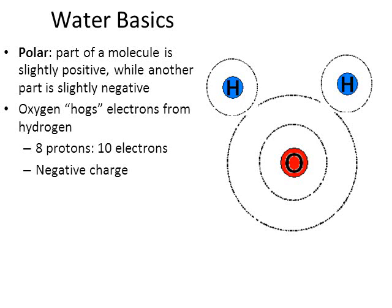That's going to give it a negative charge. So if I draw two electrons on the inside electron level of oxygen in red, and six electrons in the second level — because oxygen only has eight electrons total — by itself it has eight electrons. It's going to grab two more for a total of ten. But on its own, oxygen only has eight.